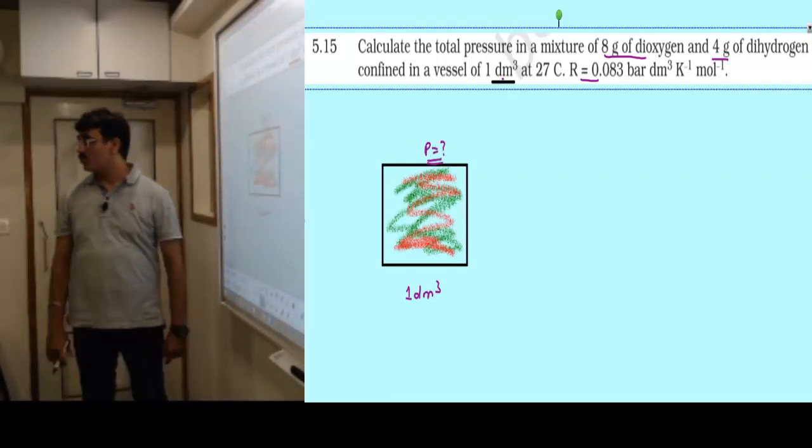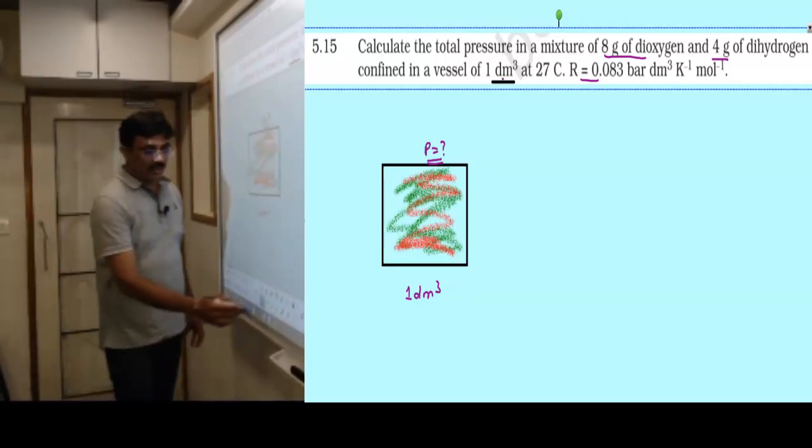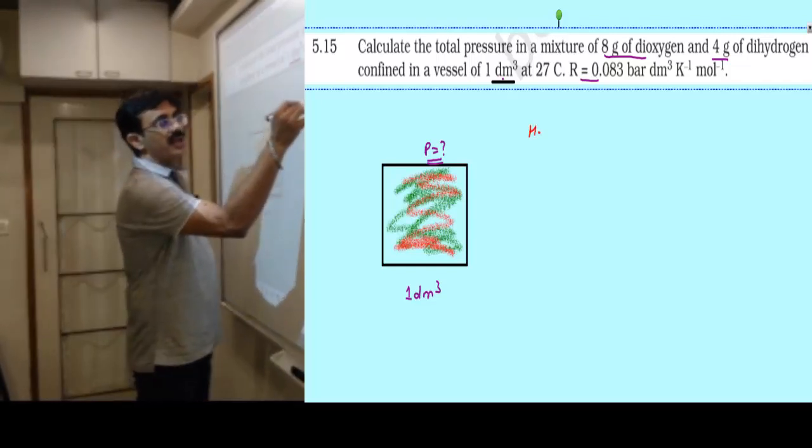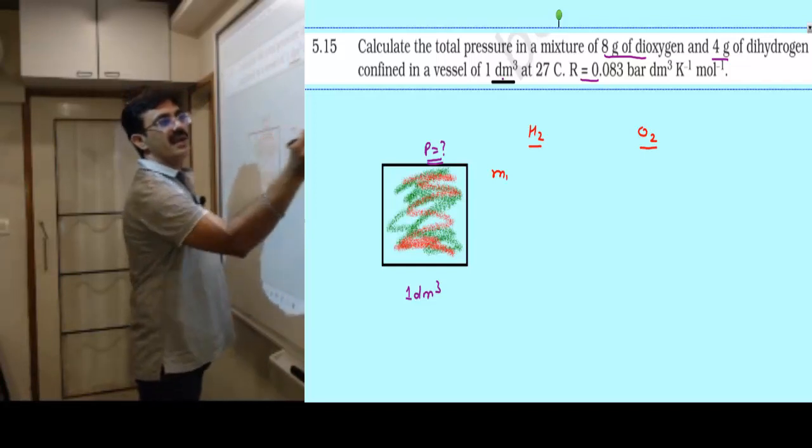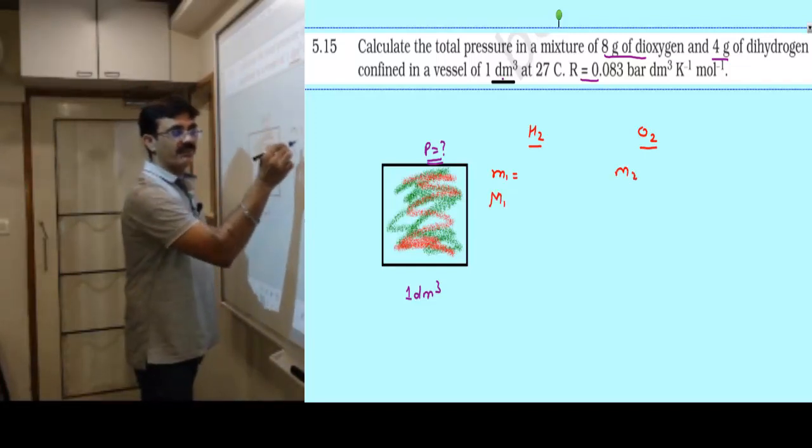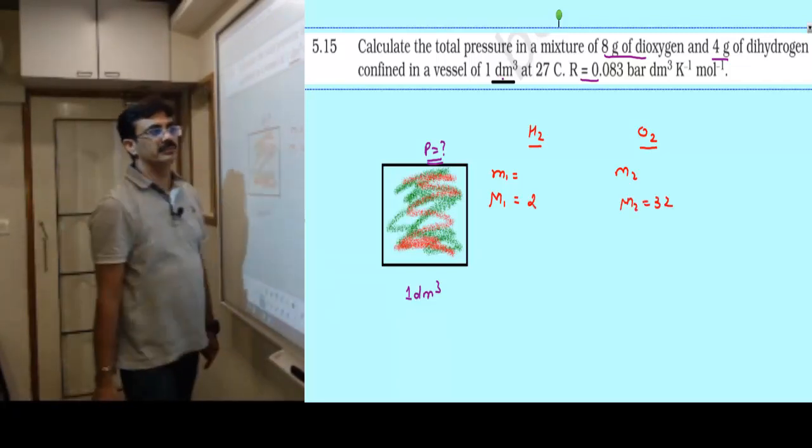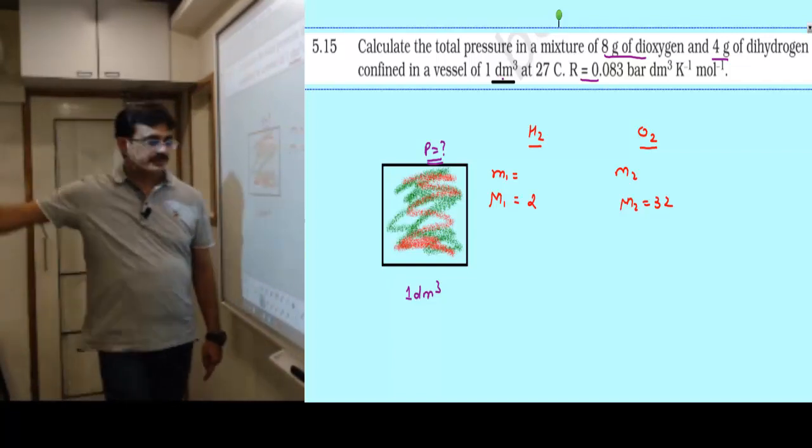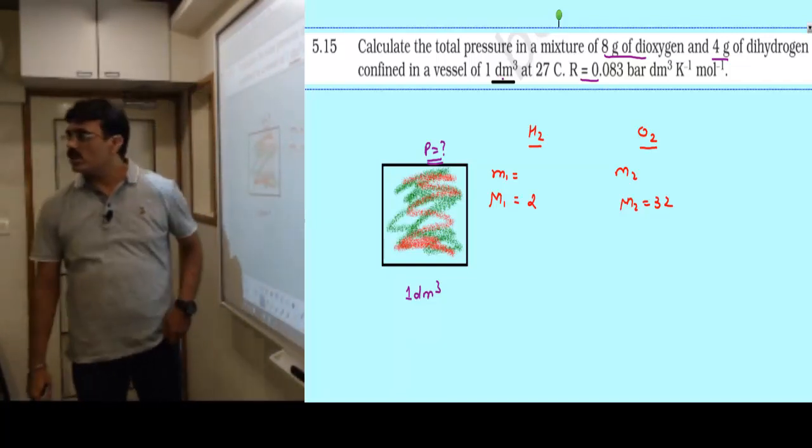Write gas number 1 and gas number 2. Masses are given for both. Molecular masses you know: hydrogen is 2, oxygen is 32. From these find the moles for both gases.